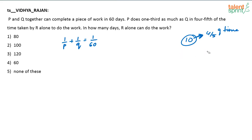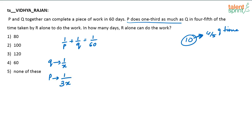Basically, what this sentence is telling us is: in a given specific time, whatever work Q does, P will do 1/3 of that — or the efficiency of P is 1/3 of Q's efficiency. For example, if Q in one day does 1/x of the work, then P in the same one day will do only 1/3x. This is what you have to understand from the given statement.